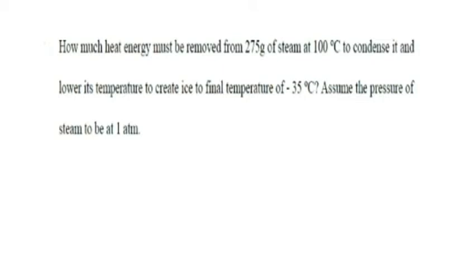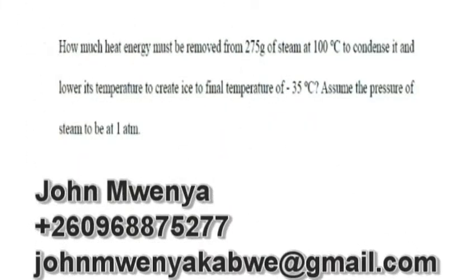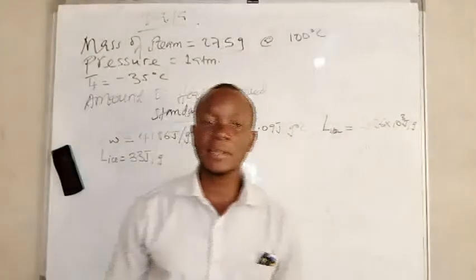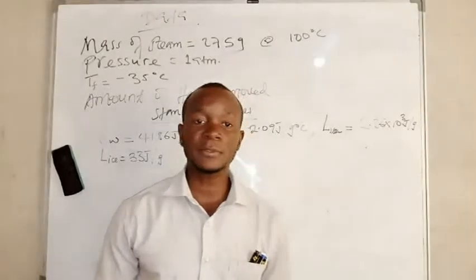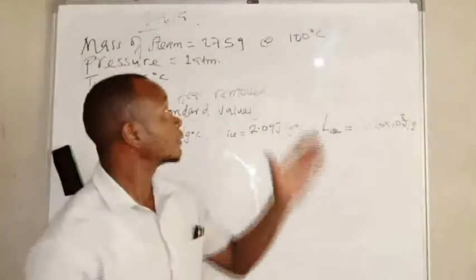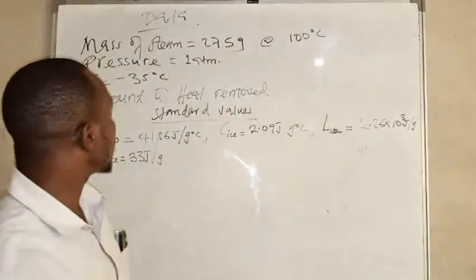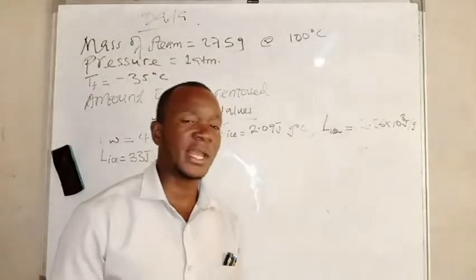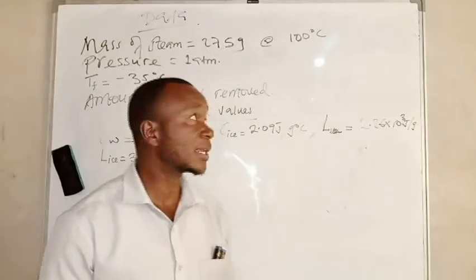In this video we are going to determine the amount of heat energy that must be removed from 275 grams of steam at 100 degrees Celsius when it condenses and the temperature is lowered to negative 35 degrees Celsius. The question demands us to find the amount of energy that must be removed from 275 grams of steam at 100 degrees Celsius to condense and bring it further to negative 35 degrees Celsius.